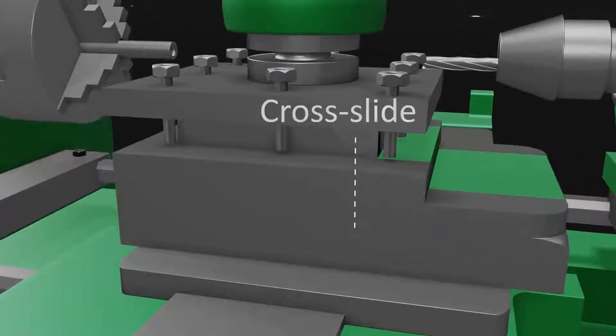Cross slide. Cross slide is a flat piece that sits crosswise on the bed which can be cranked at right angles with the bed.